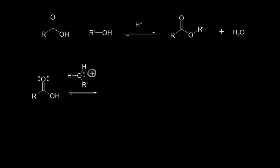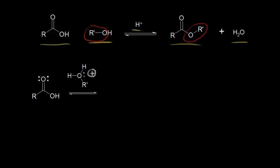One way to make an ester is to use a Fischer Esterification reaction. If you start with a carboxylic acid and you add an alcohol and a source of protons, you're going to form your ester. You're also going to make water in this process. It's important to note that the oxygen and the R' group come from your alcohol. This reaction is at equilibrium. If you want to make more of your ester product, you have to shift the equilibrium to the right.